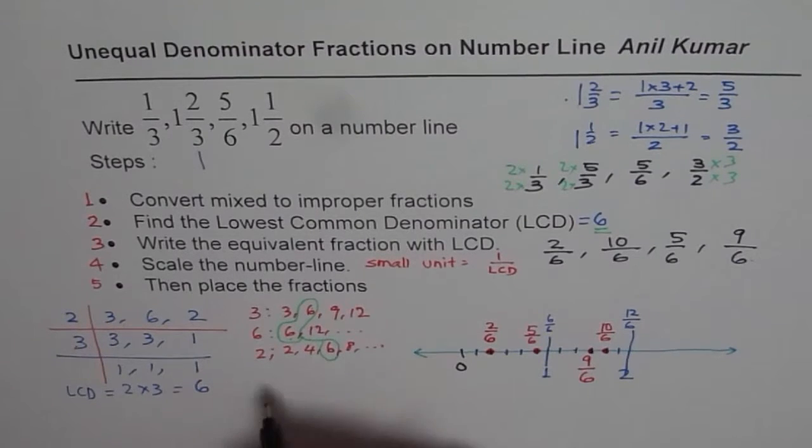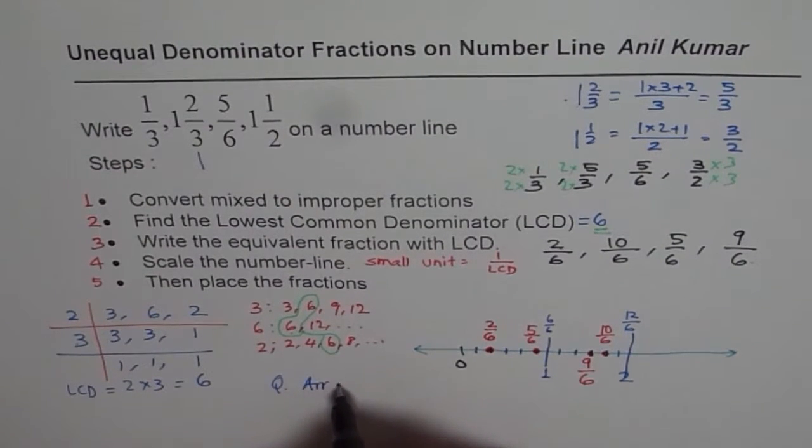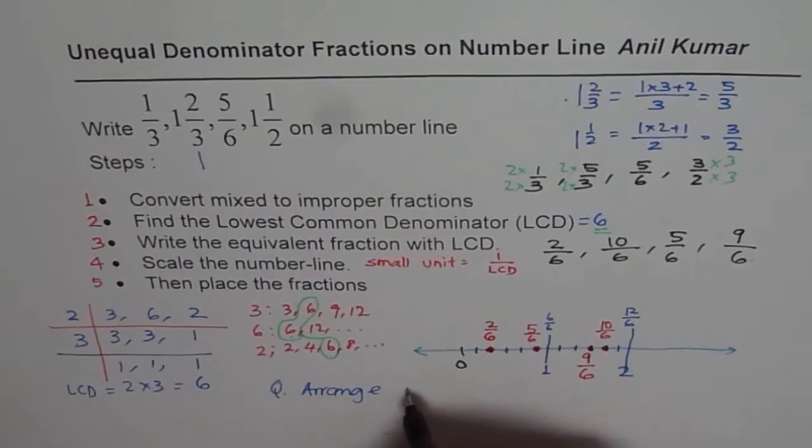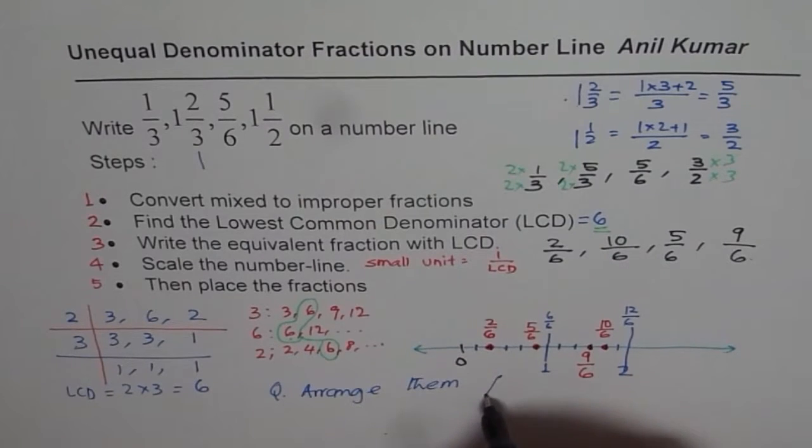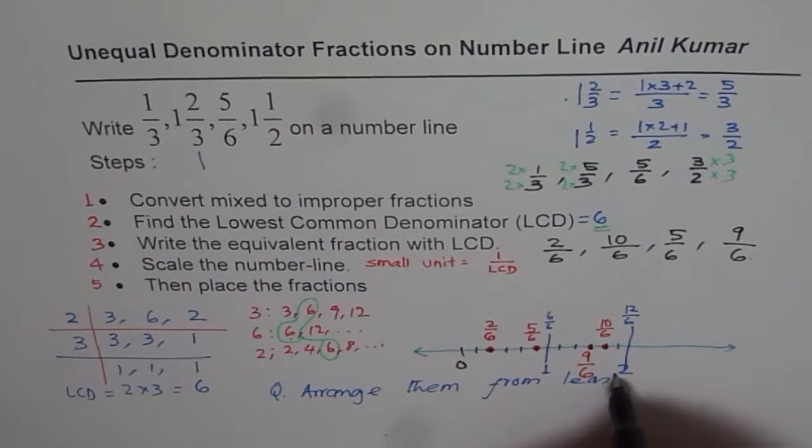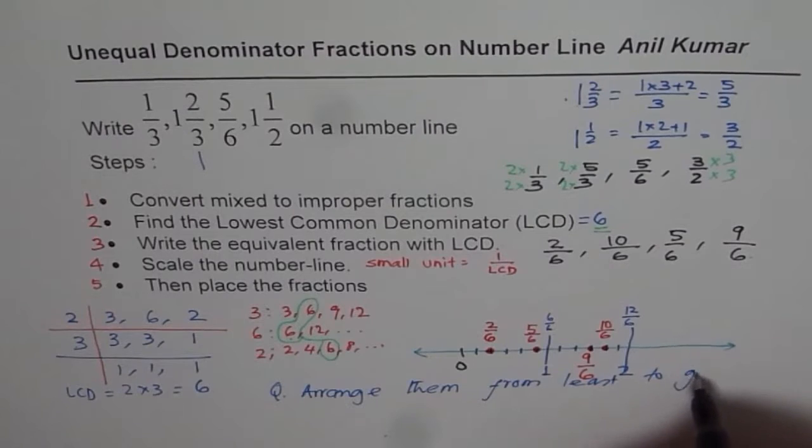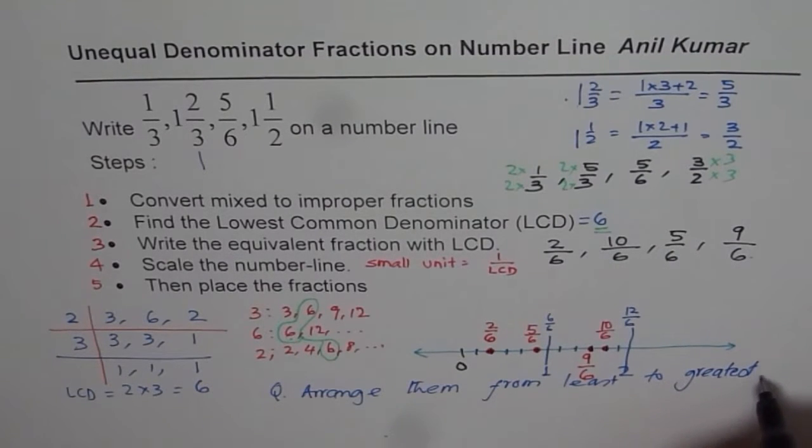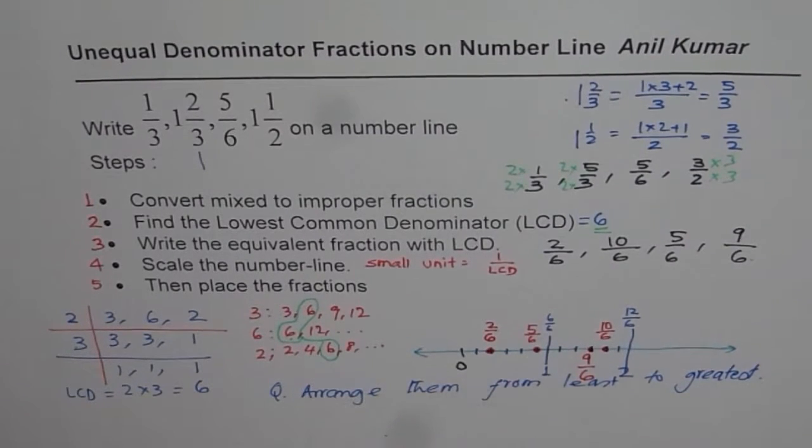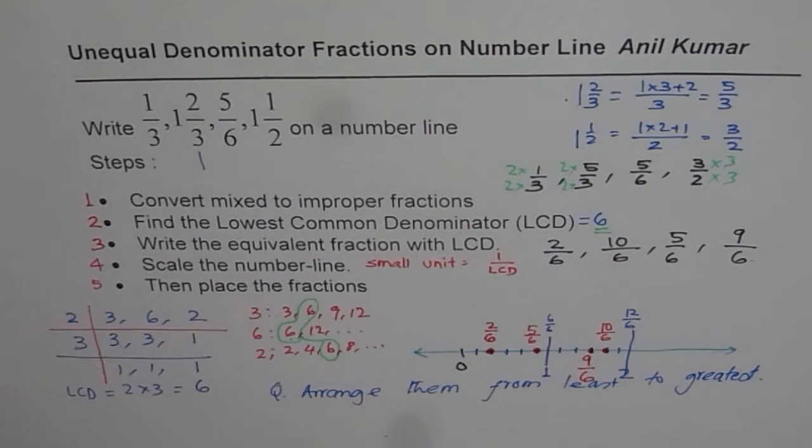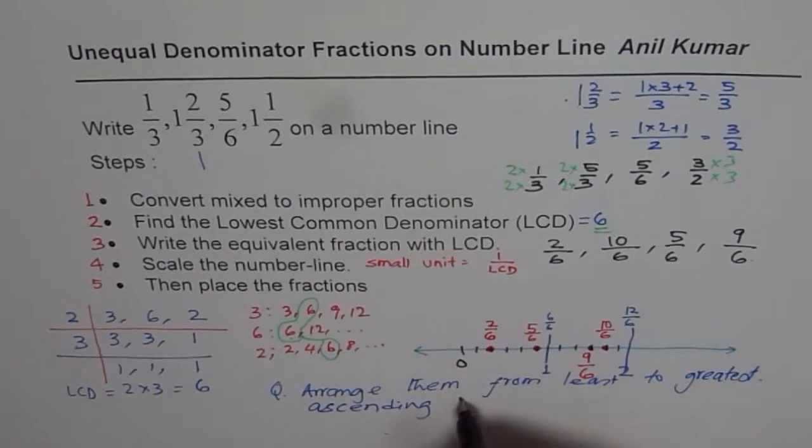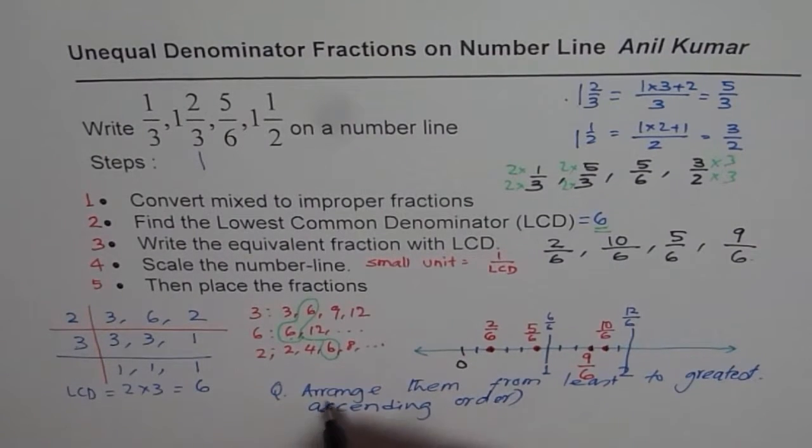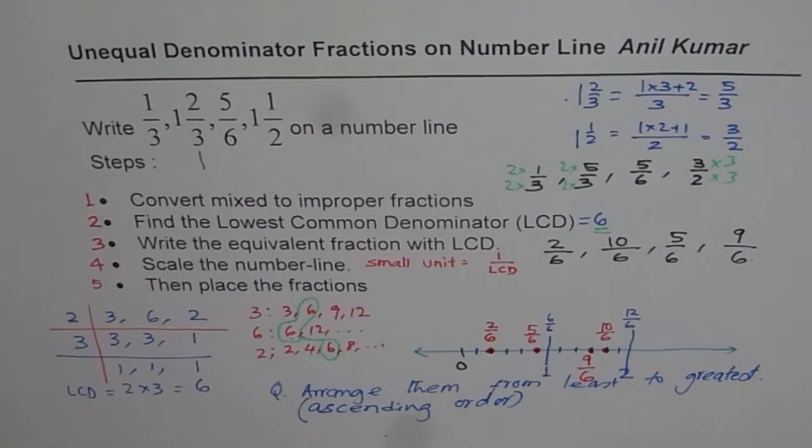Now a question for you. A question for you is arrange them from least to greatest. You can easily see them from the number line and then arrange them from least to greatest. That is also called ascending order, A-S-C-E-N-D-I-N-G order. Least to greatest. So you can do that as an exercise.